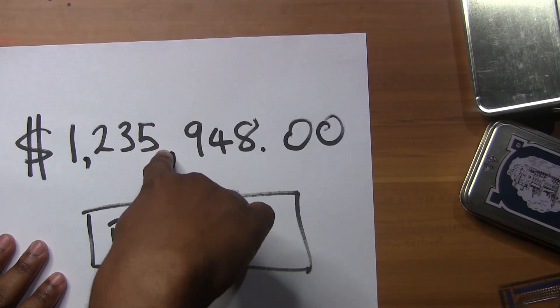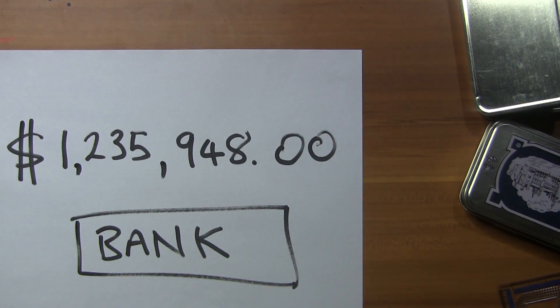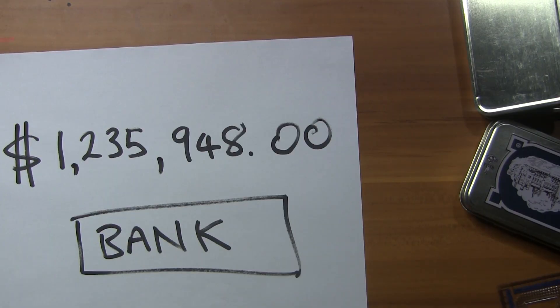Imagine you had $1,235,948 in the bank and the bank manager called you and says: 'Yo bro, big problem - computer shut down, messed up the system. We lost all the numbers, all the digits, but we just have one digit on your account.'